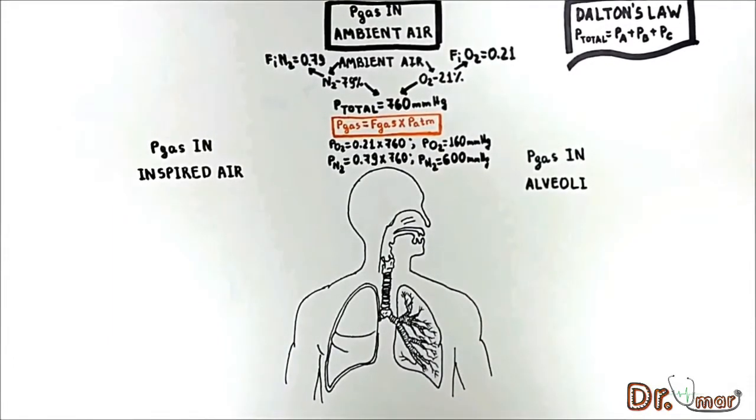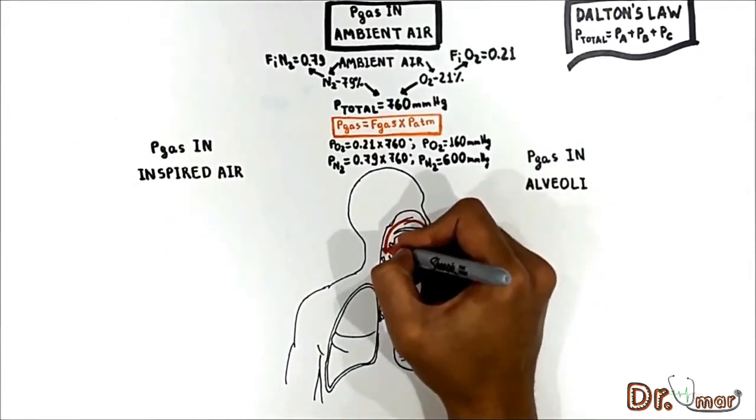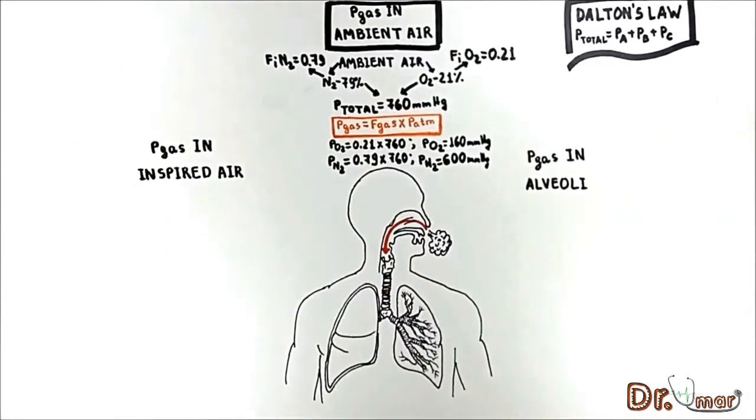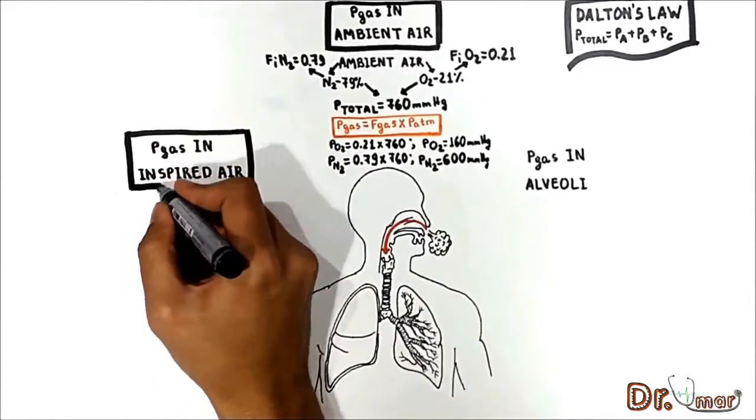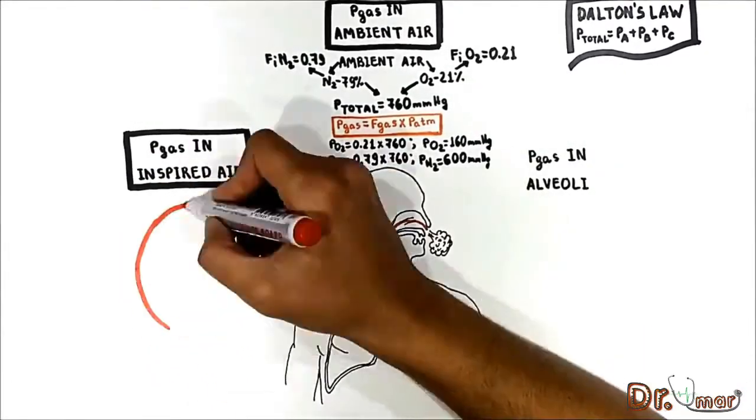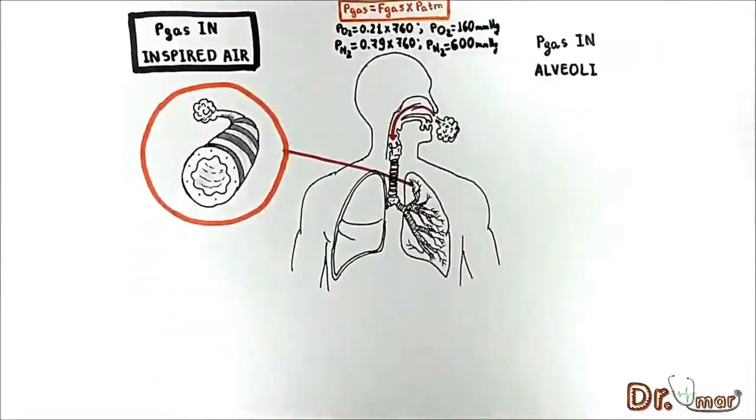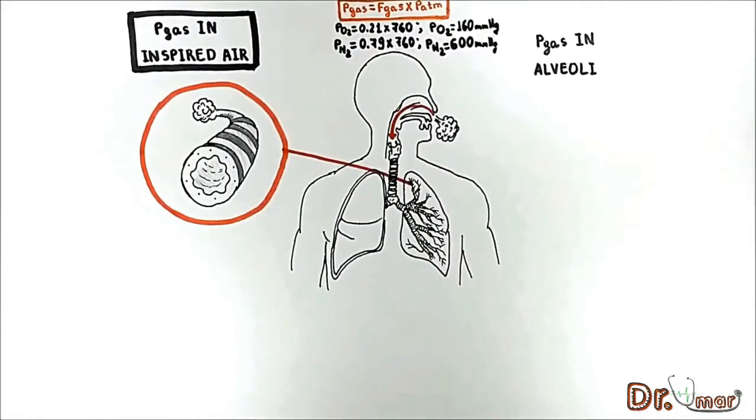After that, this air is inspired and first reaches the conducting zone, not alveoli, the respiratory zone. Let us talk about the partial pressure of gases in inspired air. Inspired air is defined as air that has been inhaled, warmed to 37 degrees Celsius and completely humidified but has not yet engaged in gas exchange. It is the fresh air in anatomic dead space that is about to enter the respiratory zone, the alveoli.